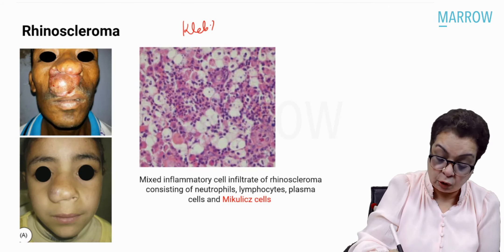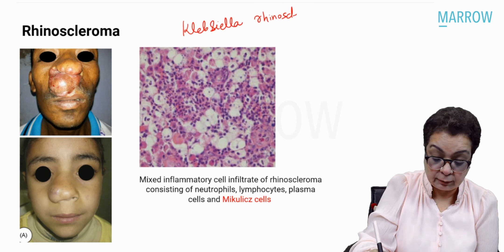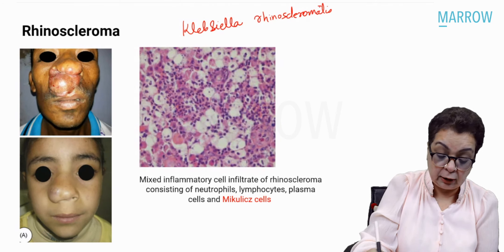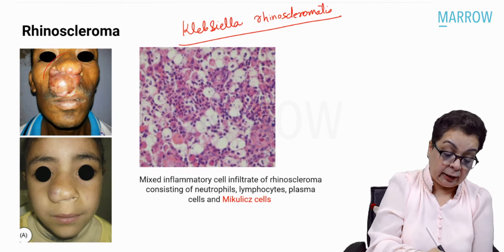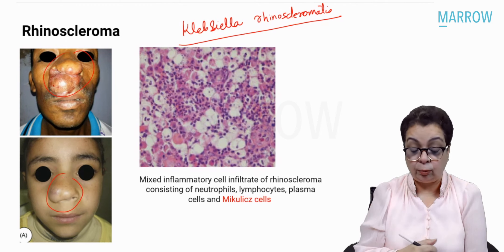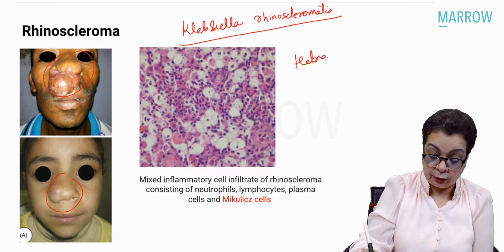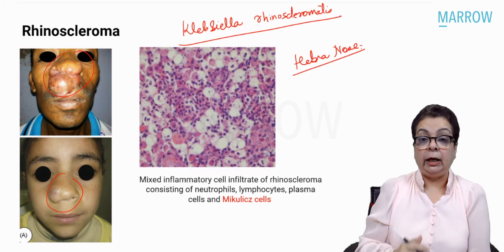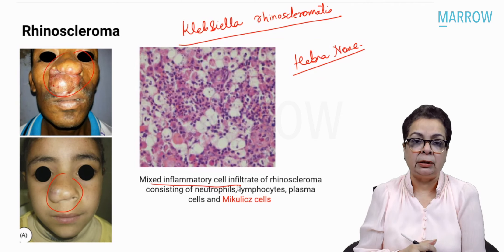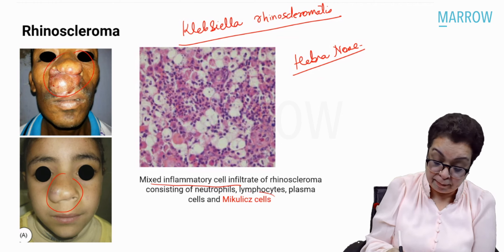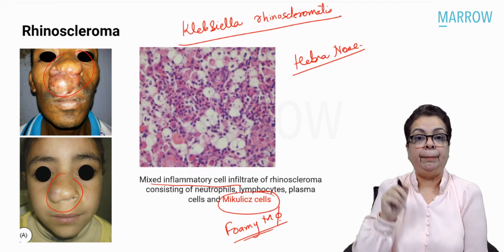Rhinoscleroma is caused by the gram-negative bacterium Klebsiella rhinoscleromatis — a chronic granulomatous disease of the upper respiratory tract. This appearance of the nose is also called the Hebra nose. On biopsy, there is a mixed inflammatory cell infiltrate containing neutrophils, plasma cells, and lymphocytes, along with foamy macrophages containing those gram-negative rods — these are the Mikulicz cells.